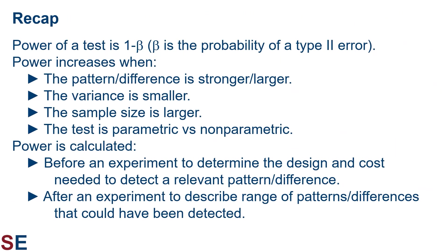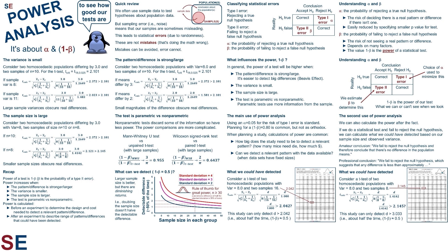To recap: the power of a statistical test is 1 minus beta, where beta is the probability of a type 2 error. The power increases when the pattern or difference is stronger or larger, the variance is smaller, the sample size is larger, and when the test is parametric instead of non-parametric. Power is calculated in two situations: before an experiment to determine the design and cost needed to detect a relevant pattern, and after an experiment to describe the range of patterns or differences that could have been detected. Understanding statistical power is useful for people doing statistical tests, but also for those who read about studies, especially ones that conclude that certain patterns aren't seen or certain factors aren't important. We need to think about whether the study design was powerful enough to see what they were looking for.